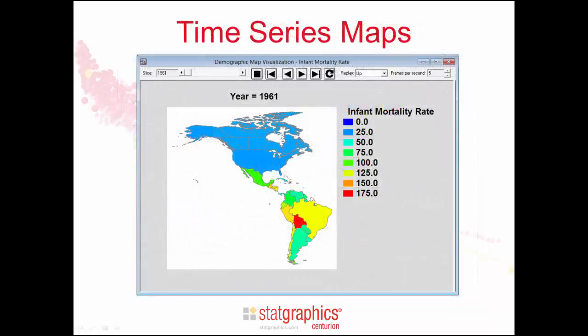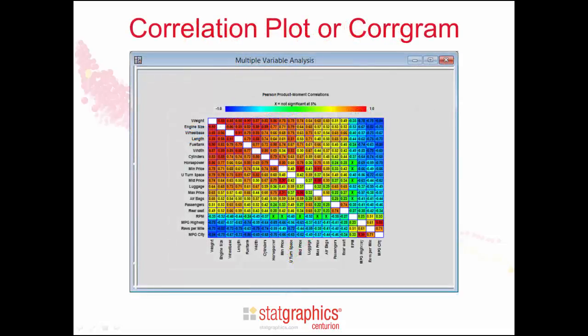The demographic maps now display any area defined by a BNA boundary file. In the visualization statlet, a variable is selected to color each region, and changes may be seen as time evolves. The correlation plot, or correlogram, displays a correlation matrix by coloring each cell according to the magnitude of the correlation. Variables are positioned according to the first principal component, which places similar variables close to each other.